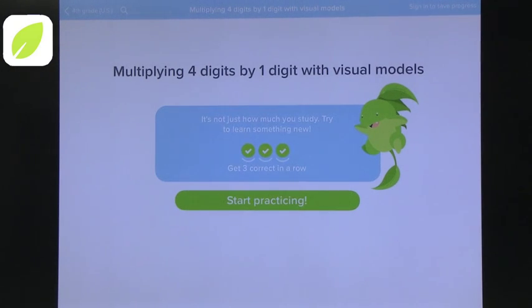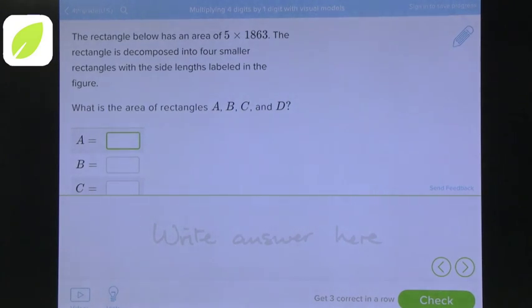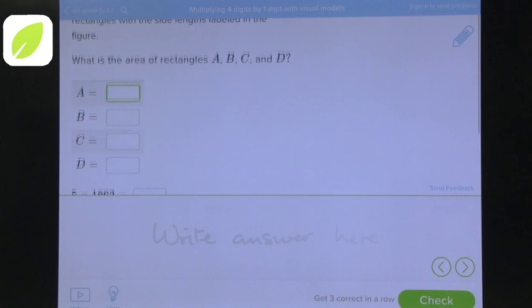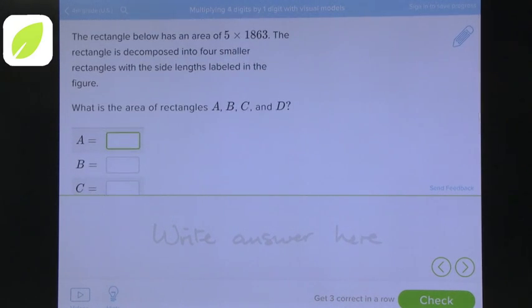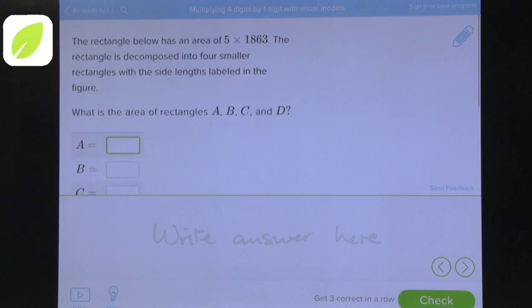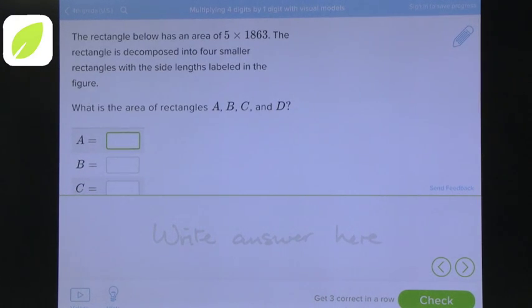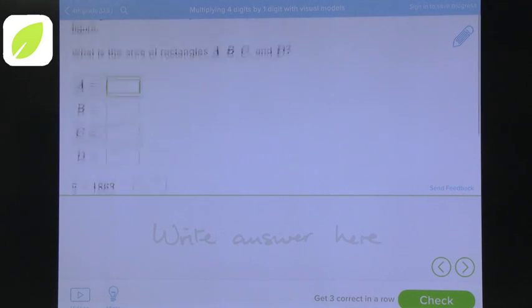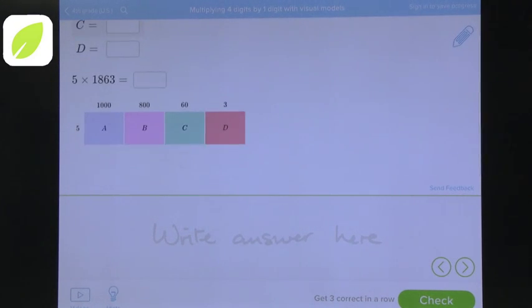You can see this is multiplying four digits by one digit and start practicing. You've got a question on top and then you've got a question for rectangles A, B, C, and D, and that is the decomposing of the 1,863 into three separate ones. You can see the example on the bottom.